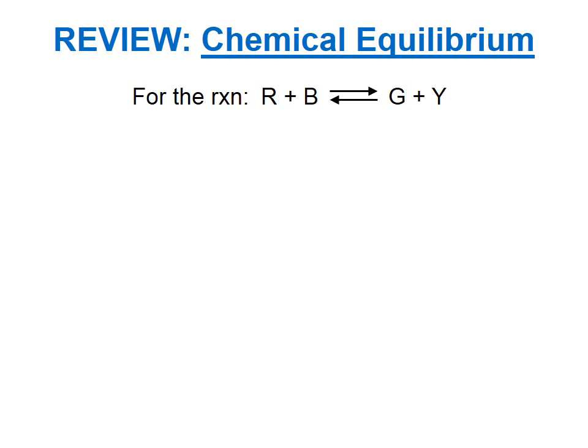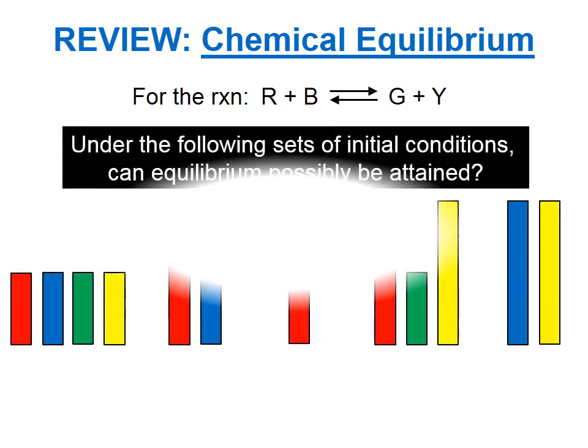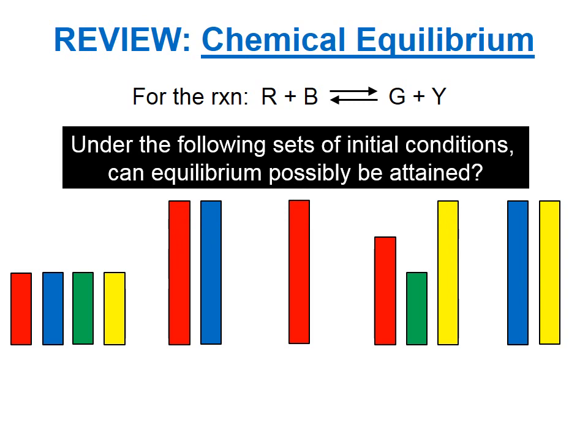Let's review chemical equilibrium. For a reaction, red plus blue yields green plus yellow.